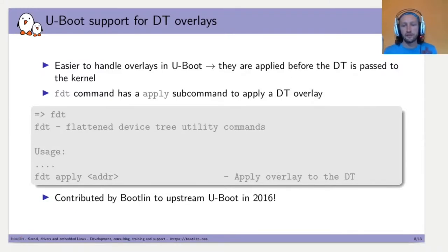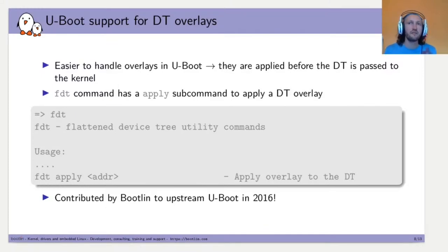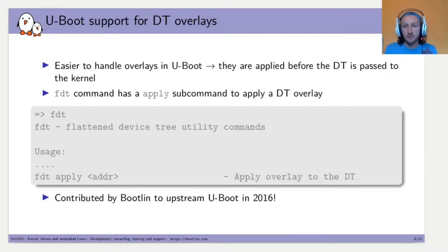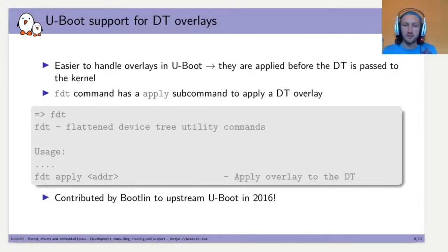The DeviceTree overlay is therefore managed in U-Boot, because the overlay is applied before anything is loaded into the kernel DeviceTree — making it much easier to handle overlays there. For that we use the 'fdt' command, and the 'apply' subcommand is the most important, as it allows us to apply any overlay to the kernel DeviceTree. This fdt command was contributed by Bootlin in 2016.